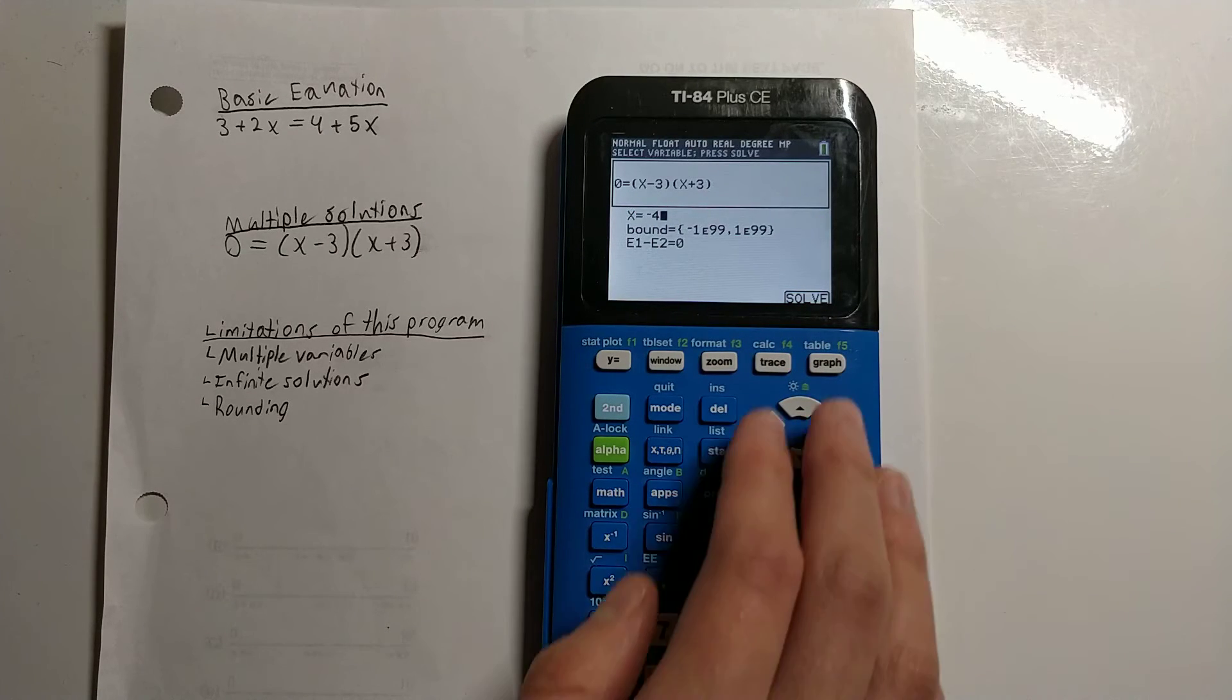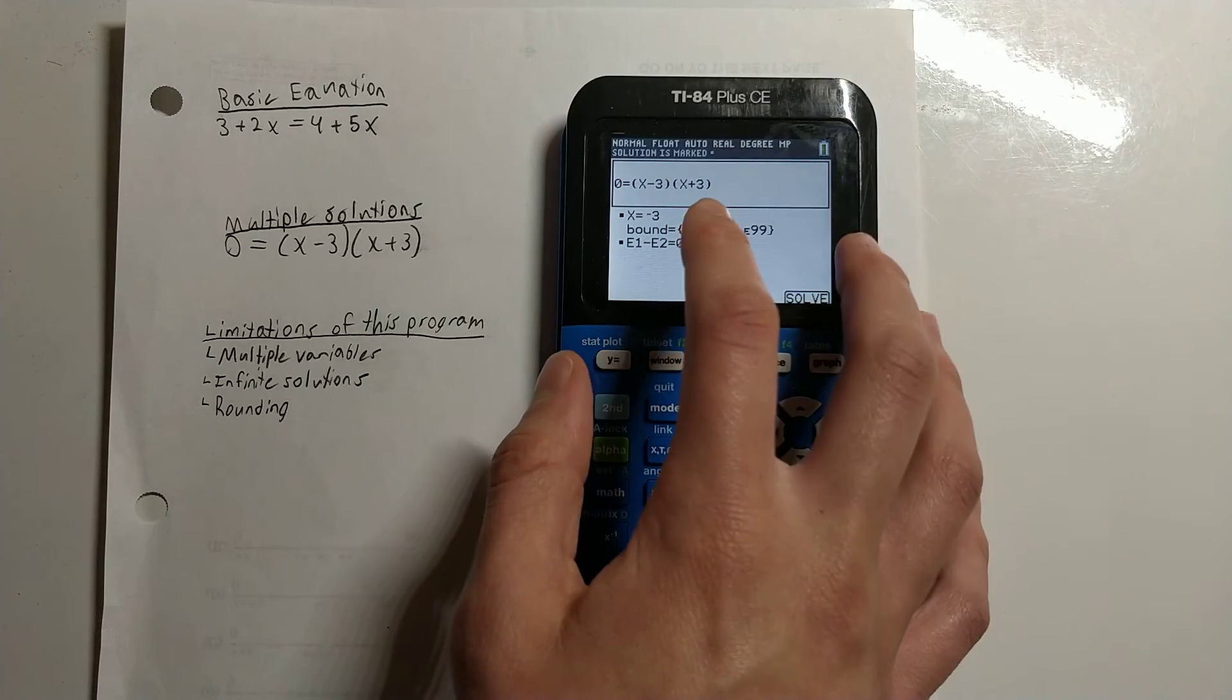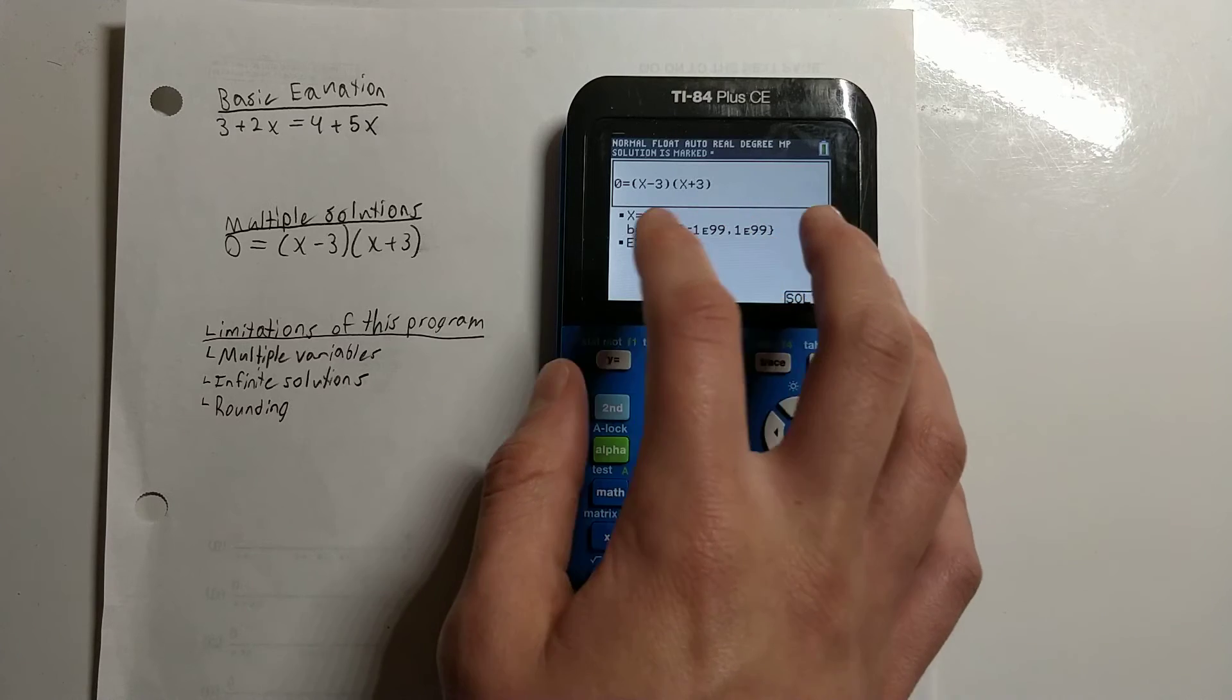If I type in -4 here and hit Solve, it'll tell me x is equal to -3, because -3 is the solution that is closest to the number that I typed in.